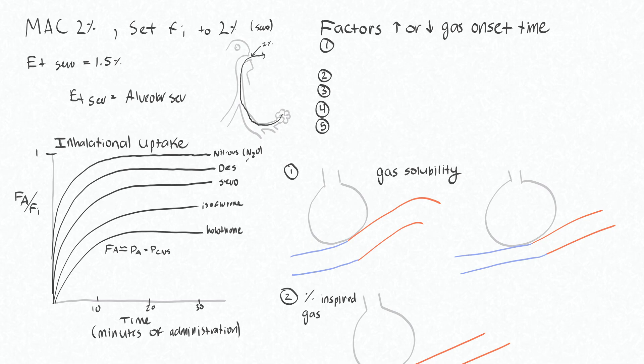On a long enough timeline, the FA over FI of all of these gases will actually approach one, but they have to saturate every compartment of your body before it does that. That is to say that the fraction of gas that you breathe in would be the same as the fraction of gas that you breathe out, and for that to happen basically no more tissues in your body have to be willing to accept the gas.